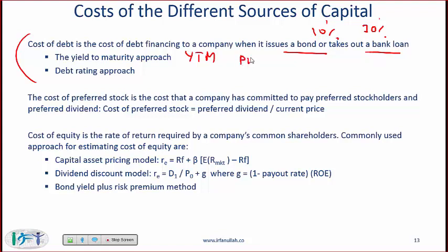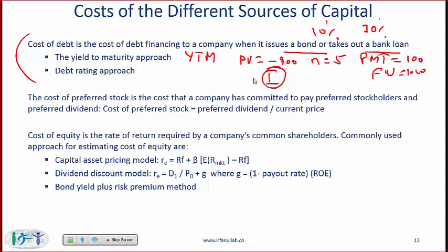On the calculator: PV = −900, N = 5, Payment = 100 (for a 10% annual coupon bond), FV = 1,000, and you compute the interest rate. That is the IRR of this project and also the yield to maturity. You've seen this in quantitative methods, here in cost of capital, and in fixed income — it is a guaranteed exam topic. The debt rating approach says you identify your company's debt rating, look at other companies with the same rating, and use the YTM on their bonds. After-tax cost means you multiply by 1 minus your marginal tax rate.